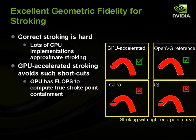One of the nice things about NVPath rendering is you get excellent geometric fidelity for stroking. Correct stroking is actually really hard — lots of CPU implementations do many approximations. The GPU accelerated approach really avoids those shortcuts because the GPU has so many programmable floating point operations that it's actually possible to compute the true stroke point containment. On the right, you can see the NVPath rendering approach compared to the OpenVG reference rasterizer on a cubic Bezier curve with a very tight initial turn — NVPath rendering matches the reference rasterizer, whereas Cairo and Qt implementations show a circular notch cut out, which is not the correct path.